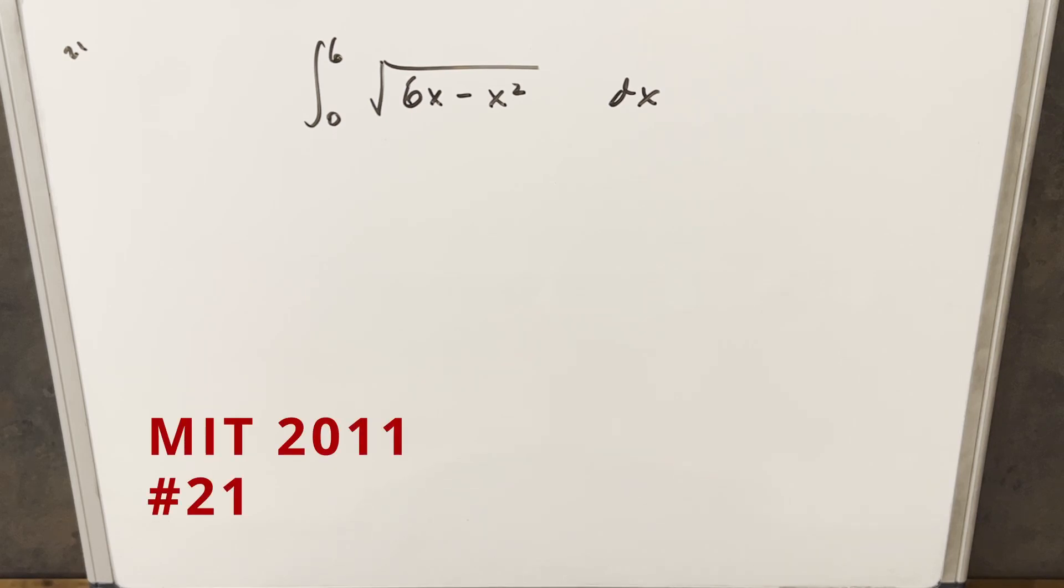We have here today another integral from the MIT Integration B 2011. This was problem 21. We have the integral from 0 to 6 of the square root of 6x minus x squared dx.